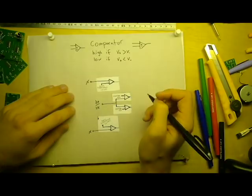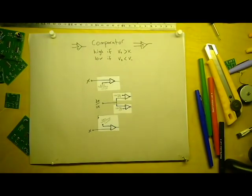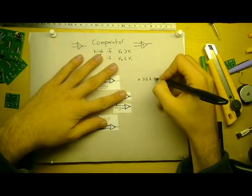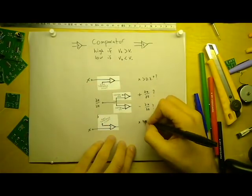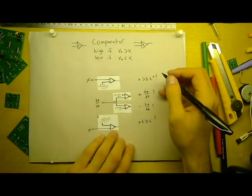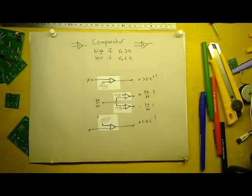Each of these comparators represents one of the booleans we saw in our truth table. From top to bottom, they decide if the position of the stick is positive and above the dead zone, if the velocity of the stick is positive, if the velocity of the stick is negative, and then if the position of the stick is negative and below the dead zone.